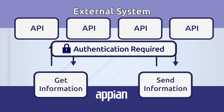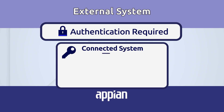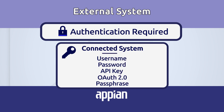Introducing the connected system design object. The connected system design object is designed to hold the credentials needed to access an external system. If those credentials should change, a developer can open the object, update the credentials, without affecting the connected integrations. And with object permissions, the connected system can be secured so that only specific developers can administer, edit, or use it when building integrations.